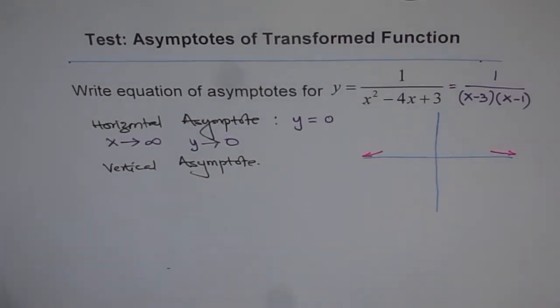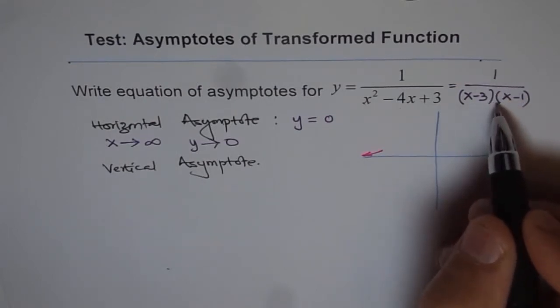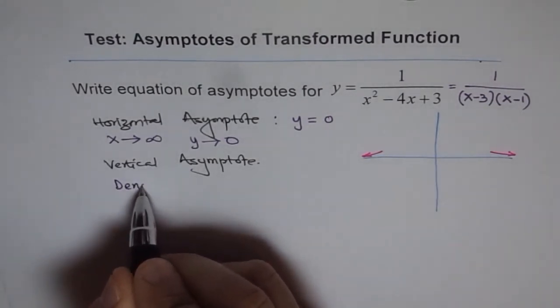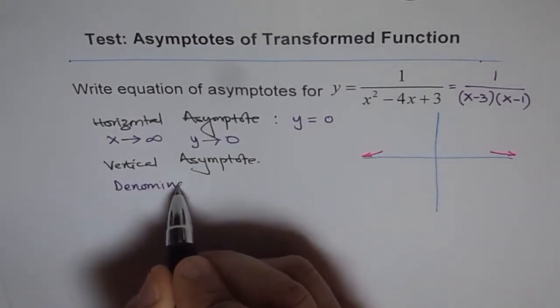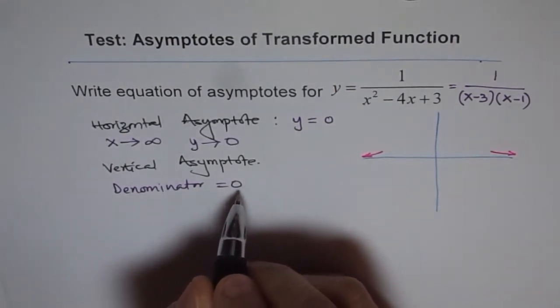To find the vertical asymptote, we equate the denominator to 0. Since 1 over 0 is undefined, vertical asymptote occurs when the denominator equals 0. That is a possibility of vertical asymptote.